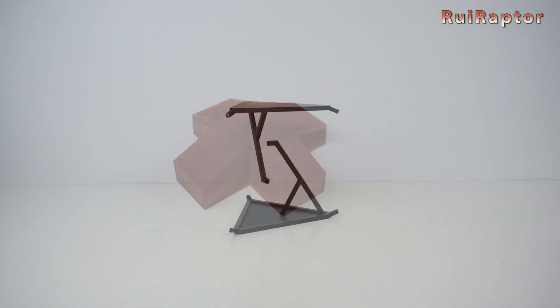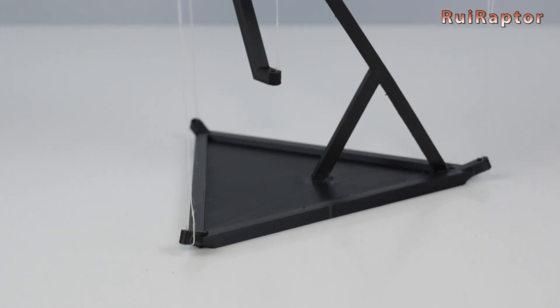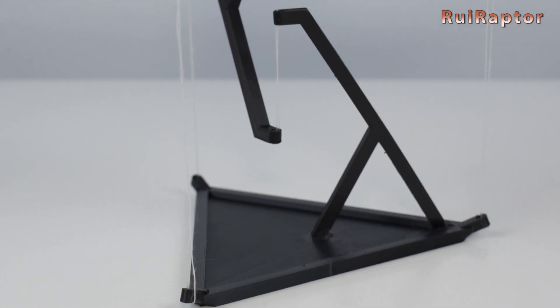This next optical illusion uses suspension and tension to create the illusion of a levitating platform. This design uses the physics principle known as the tensegrity effect, which gives the illusion that the top platform is floating in mid-air.